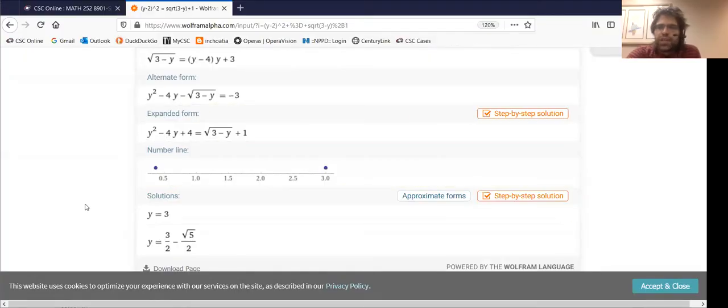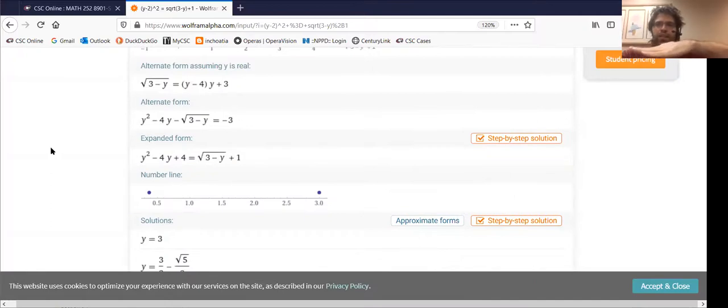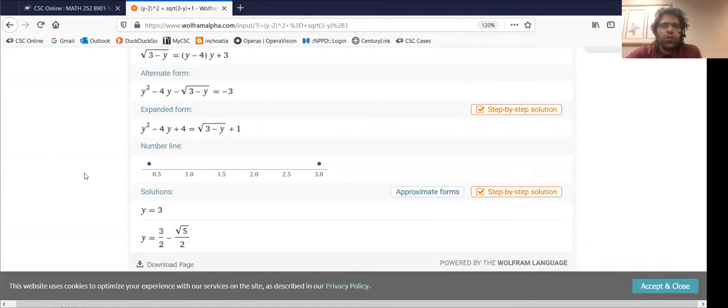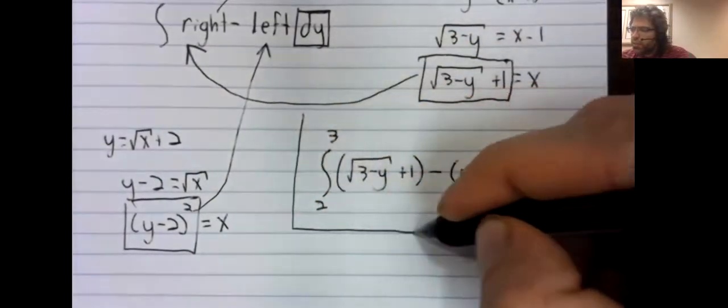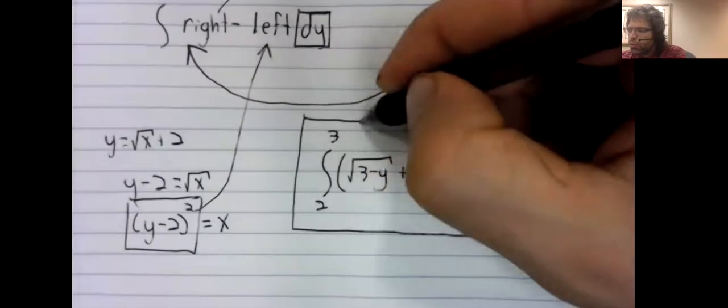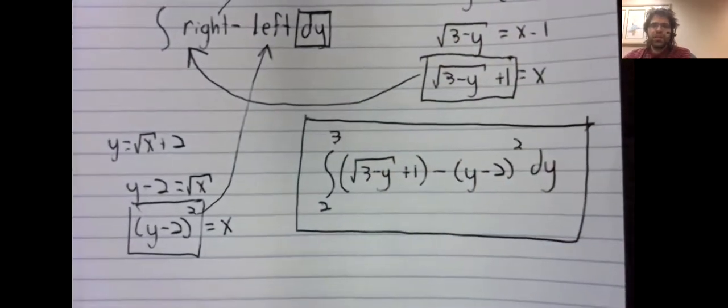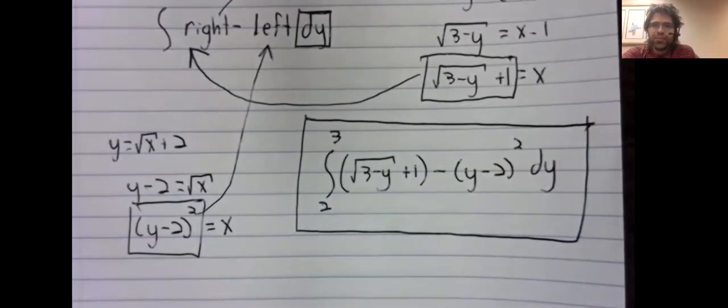We get two solutions. However, we know that here's y equals 2. Here's the point of intersection we're looking for above 2. 3 halves minus the square root of 5 over 2 is below 2. So 3 must be what we're looking for. And here then is our integral all set up. Let's see if we can take it without making any last minute errors.